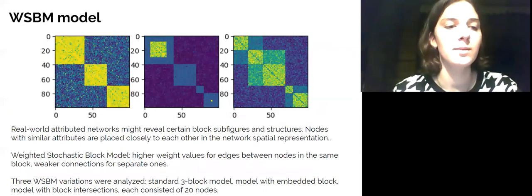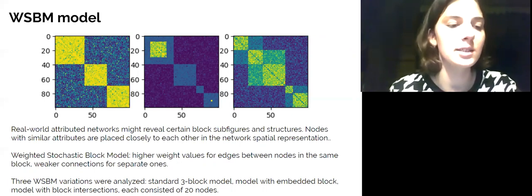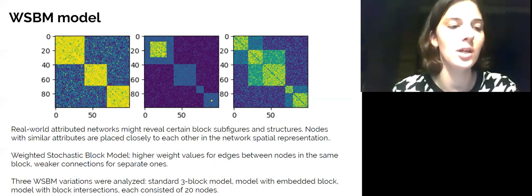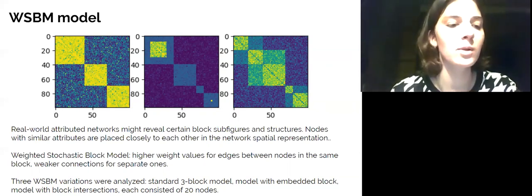As a generative template for experimental data, we used weighted stochastic block model. Such choice is based on the fact that many real-world data networks with attributed node profiles reveal certain block substructures and structures. In a spatial representation of such network, nodes with similar attributes will be placed closely to each other. As long as real-world network data often contains or implies node attribute information, we decided to use block model network structures as the synthetic datasets for our TDA-based embedding method.